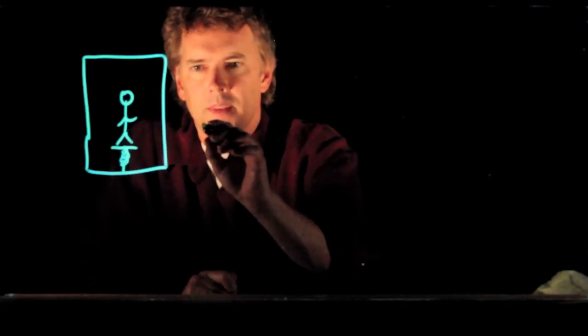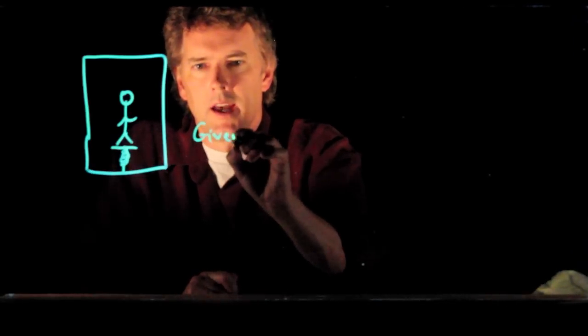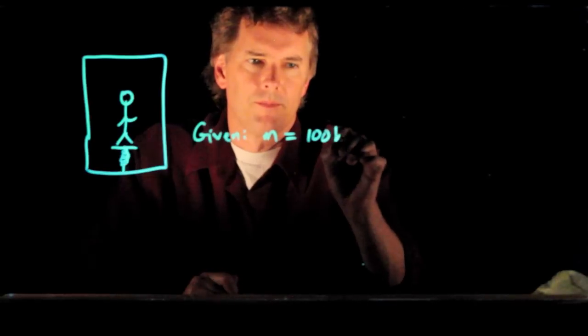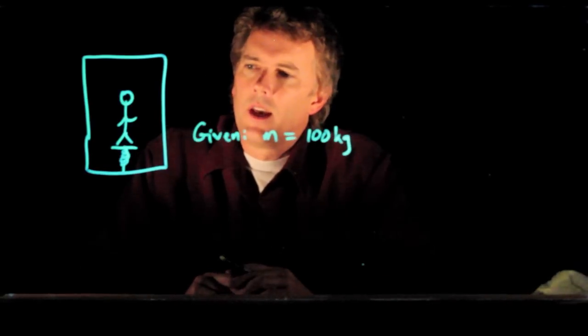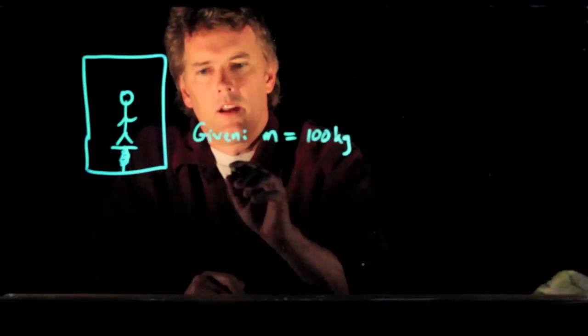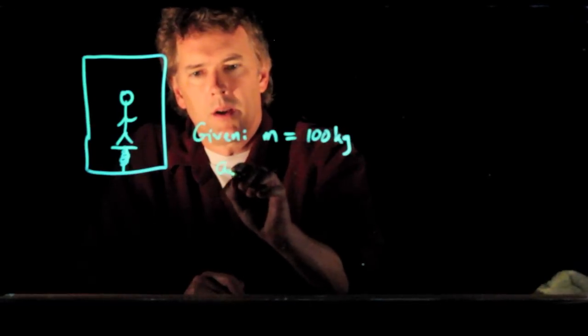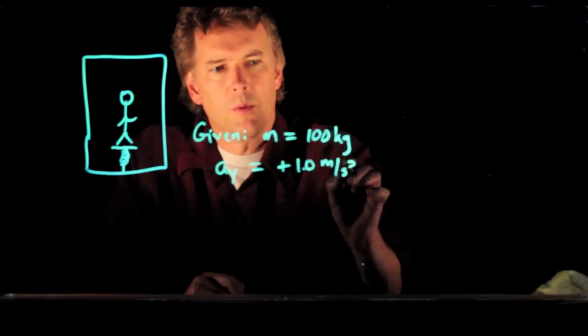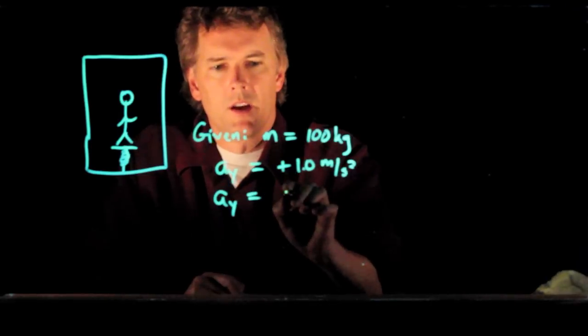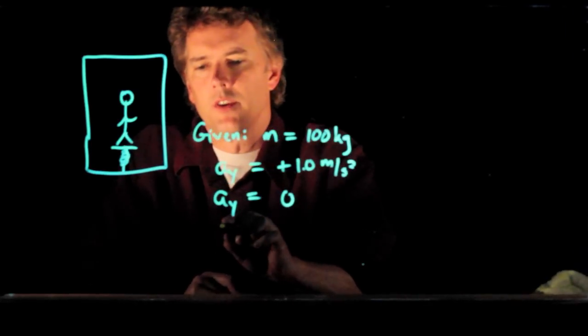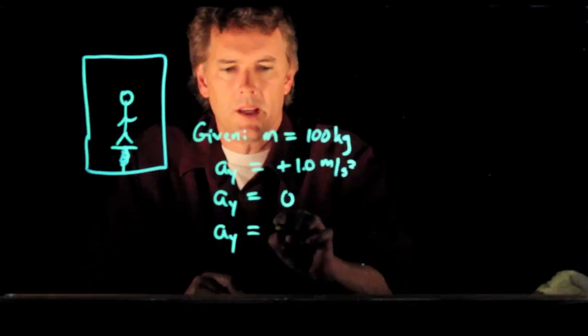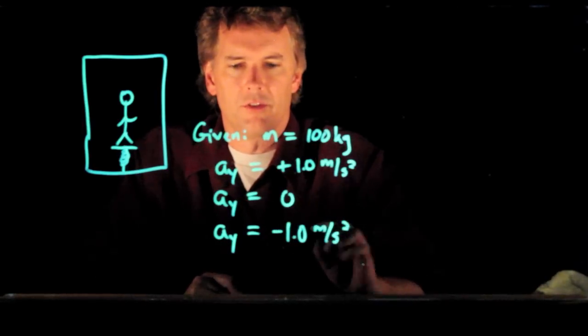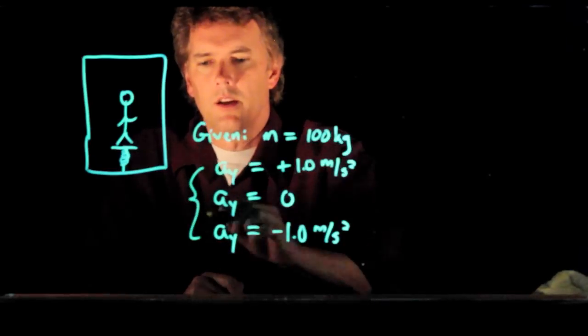And let's give you some givens. So let's say that your mass is 100 kilograms. And we'll say that the acceleration when it's going up is positive 1.0 meters per second squared. When it's moving up at constant velocity, the acceleration is zero. And when it's slowing down, it is negative 1.0 meters per second squared. So those are the three conditions.